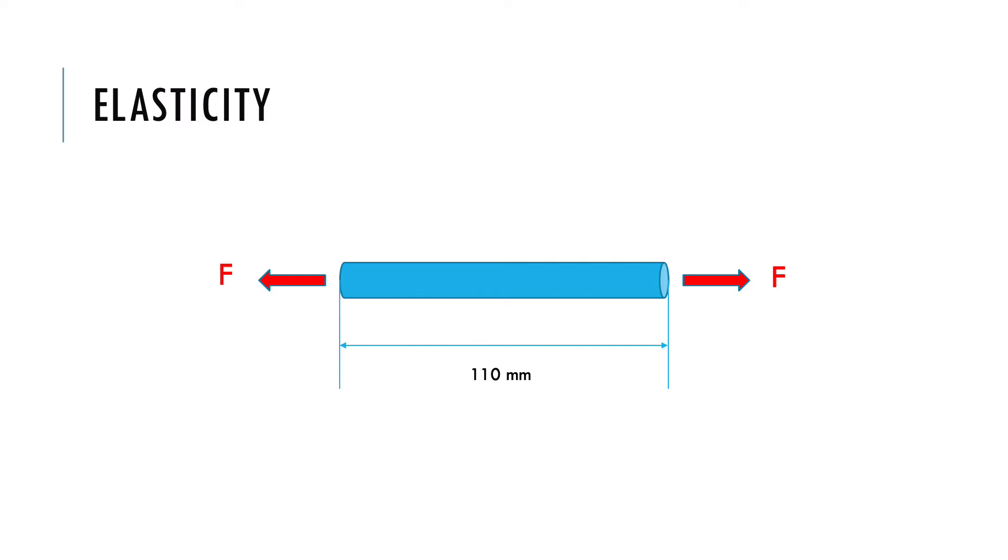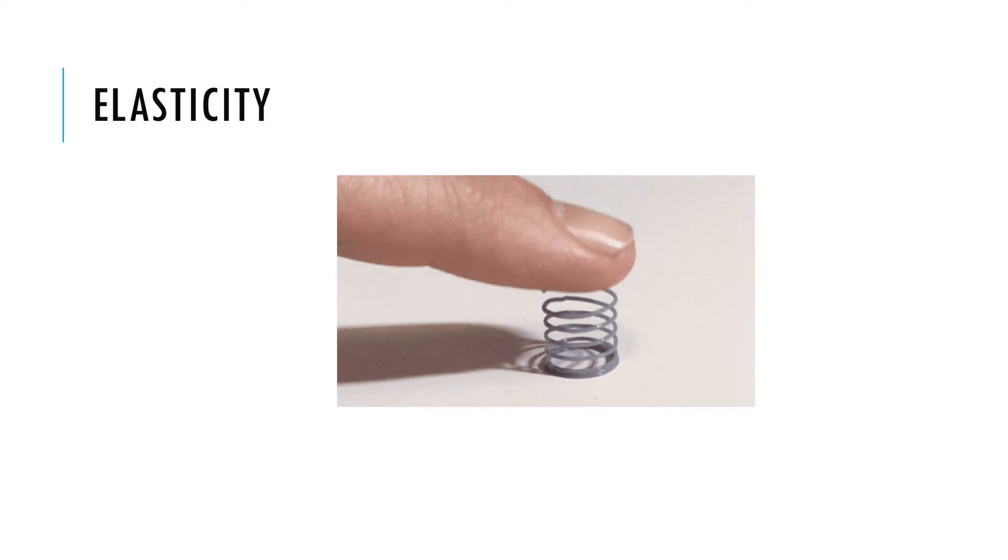Once a tensile force is applied to a rod it elongates to 110 millimeters. As the force is removed it comes back to original length. Let's see another example of spring loaded with compressive force. When force is removed it comes back to its original shape.